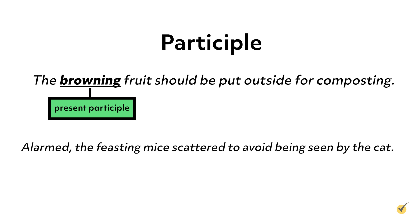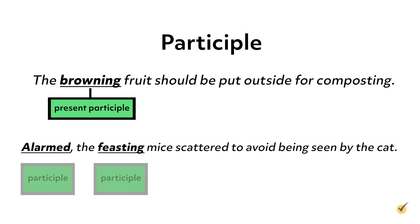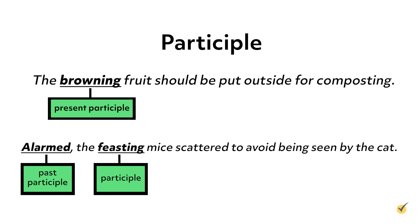Here's another example: 'Alarmed, the feasting mice scattered to avoid being seen by the cat.' In this sentence there are two participles. The word alarmed is a past tense verb being used as an adjective to describe mice, so it is a past participle. The word feasting is a present progressive tense verb — meaning the action is ongoing — and it is also being used to describe mice, so it is a present participle.